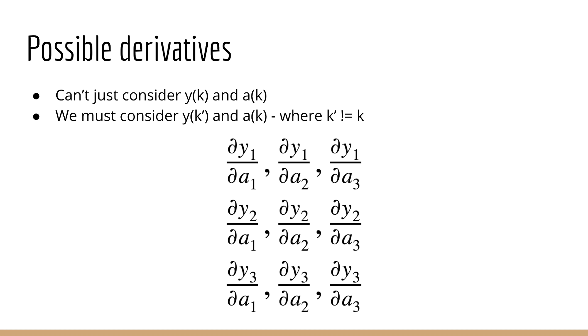What this means is there are actually nine different derivatives we need to consider. dy1 by da1, dy1 by da2, dy1 by da3, and so on. Importantly, we can see that there are instances where the index for y is the same as the index for a, but there are also instances where the index for y is not the same as the index for a. In other words, it doesn't make sense to only consider dyk by dak. We also have to consider the instances where we have dyk prime by dak, where k prime is not equal to k.